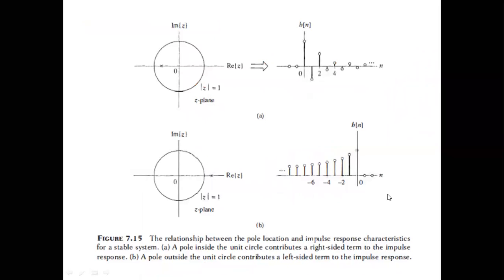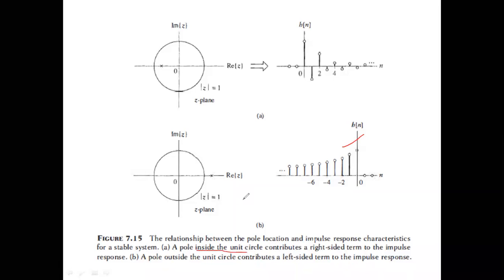The relation between pole location and impulse response characteristics: a pole inside the unit circle contributes to a right-sided, stable impulse response. If there is a pole outside the unit circle and you want stability, it can only be a left-sided sequence. Let us go to the problems to understand the bottom line.